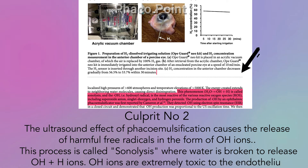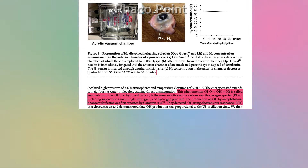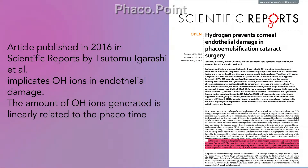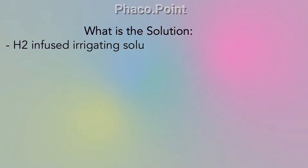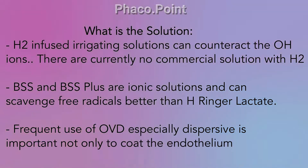This process is called sonolysis, where water is broken up to release hydroxyl ions and hydrogen ions. Hydroxyl ions are extremely toxic to the endothelium. In an article published in 2016 in Scientific Reports by Sutomo Igarashi et al., they implicate hydroxyl ions in endothelial damage, and the amount of these ions generated is linearly related to the phaco time. To counteract this, hydrogen infused into the irrigating solution can neutralize the hydroxyl ions.